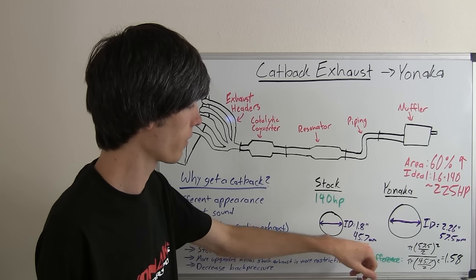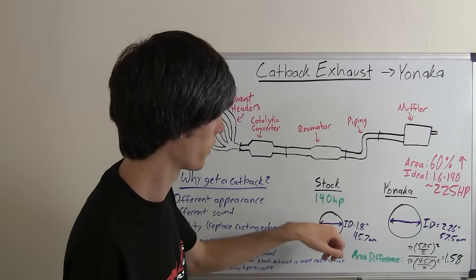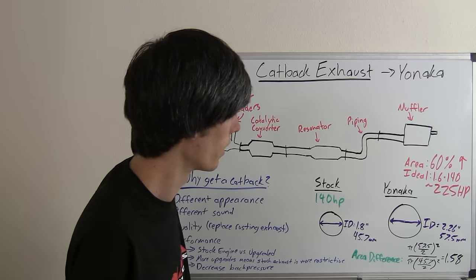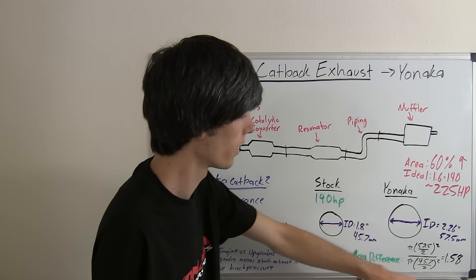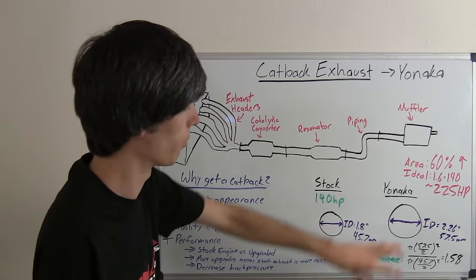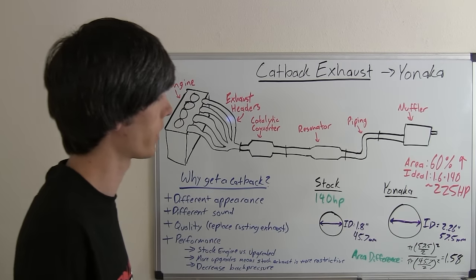So with the inner diameter of 45.7 millimeters on the stock versus the 57.5 millimeters on the Yonaka cat-back, we can find out with some simple math, dividing the areas, that the Yonaka is about 58% more area, so about 60% greater area.